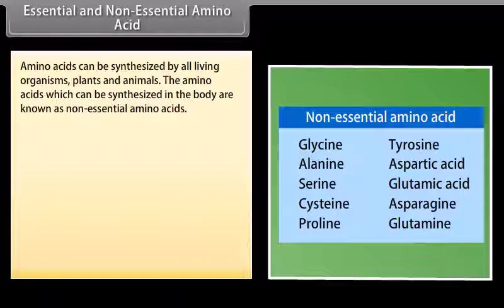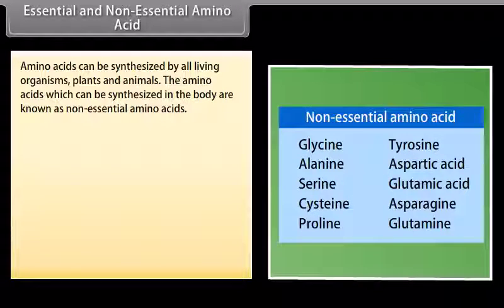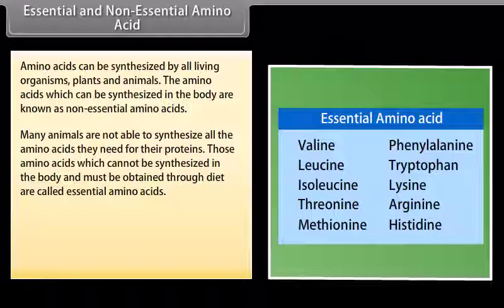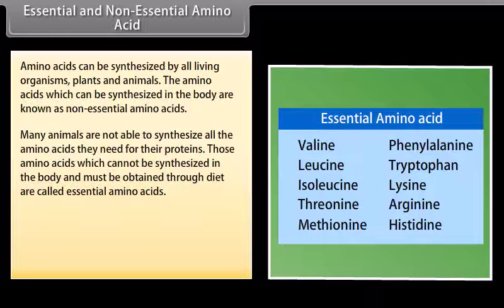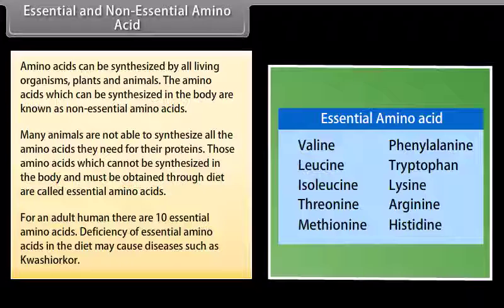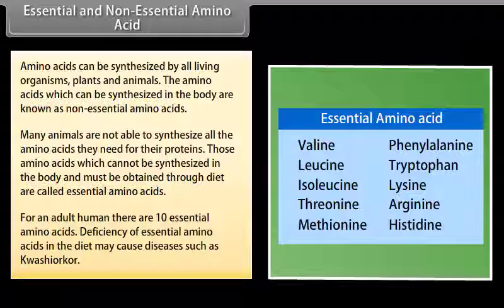Essential and non-essential amino acids. Amino acids can be synthesized by all living organisms — plants and animals. The amino acids which can be synthesized in the body are known as non-essential amino acids. Many animals are not able to synthesize all the amino acids they need. Those amino acids which cannot be synthesized in the body and must be obtained through diet are called essential amino acids. For an adult human, there are 10 essential amino acids. Deficiency of essential amino acids in the diet may cause diseases such as Kwashiorkor.